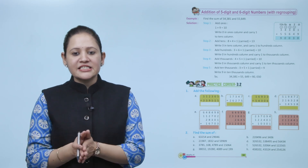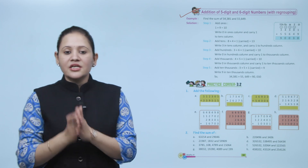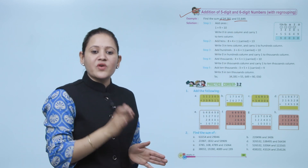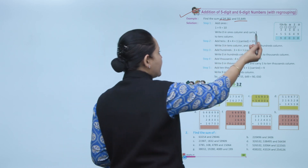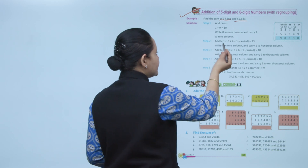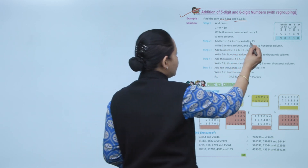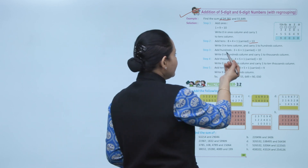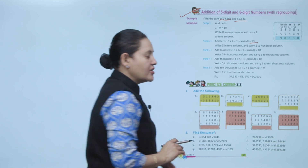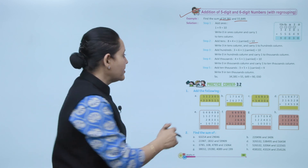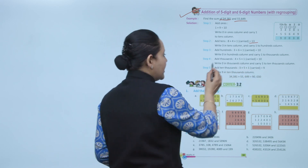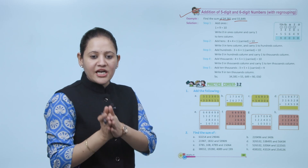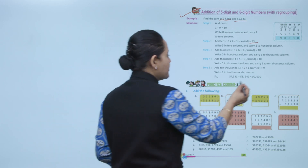Next is addition of five-digit and six-digit numbers with regrouping. We'll take an example and add these numbers. Start from ones: 1 plus 9 is 10, write 0 in the ones column and carry 1 to the tens column. Add tens: 8 plus 4 plus 1 carried is 13, write 3 under tens and carry 1 to hundreds. Add hundreds: 4 plus 5 plus 1 is 10, write 0 and carry 1. Add ten-thousands: 3 plus 5 plus 1 is 9. The sum is 90,030.